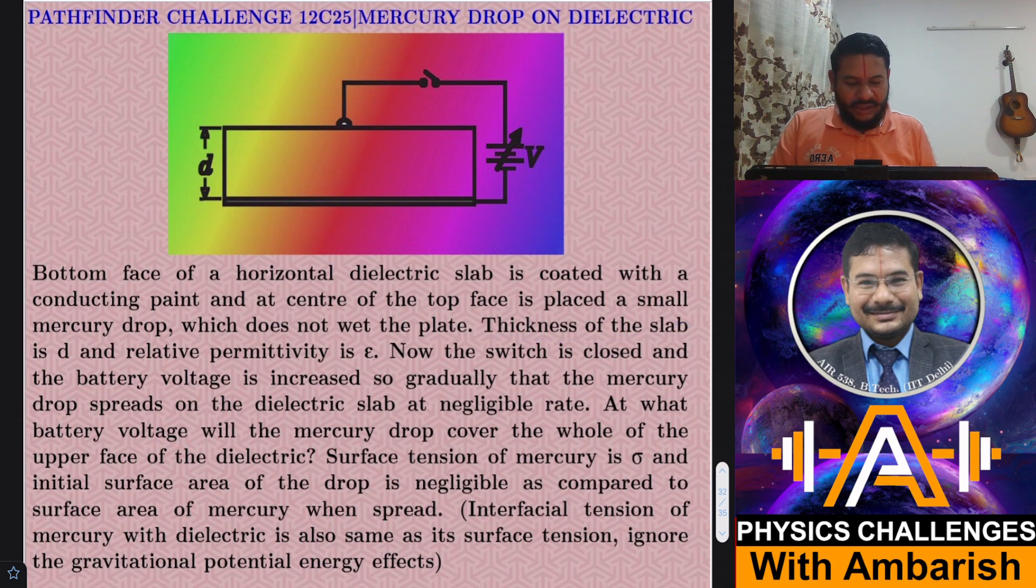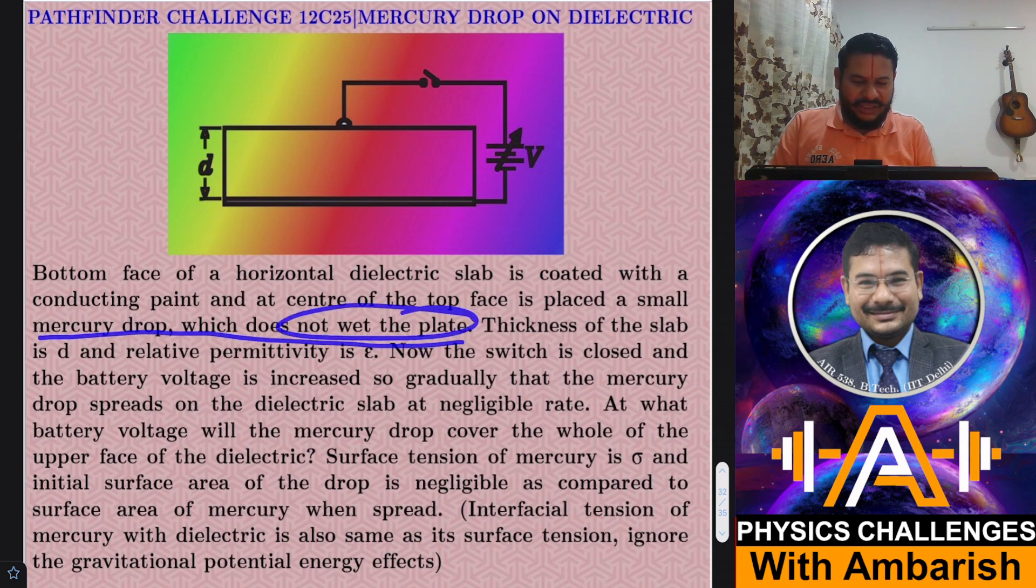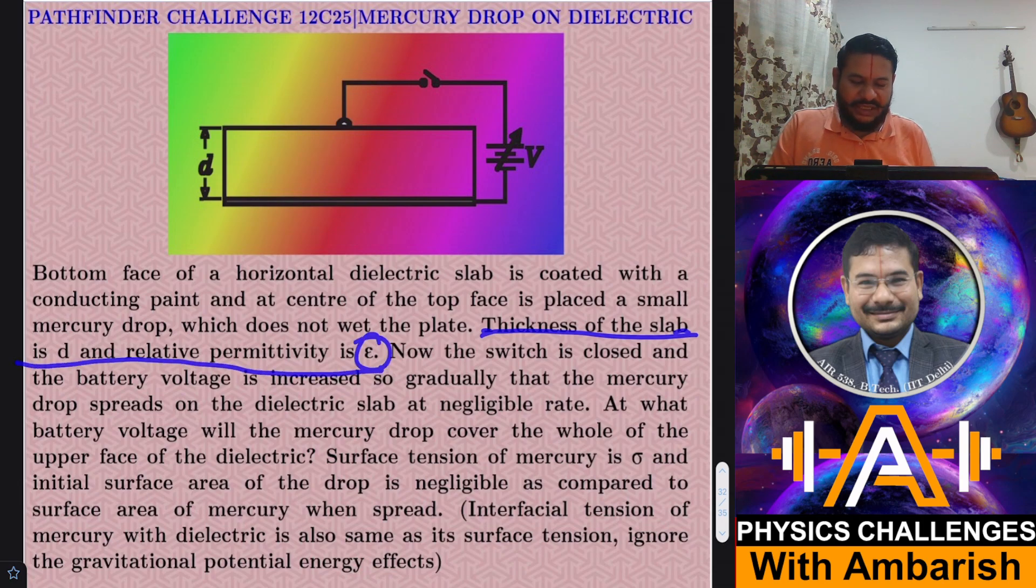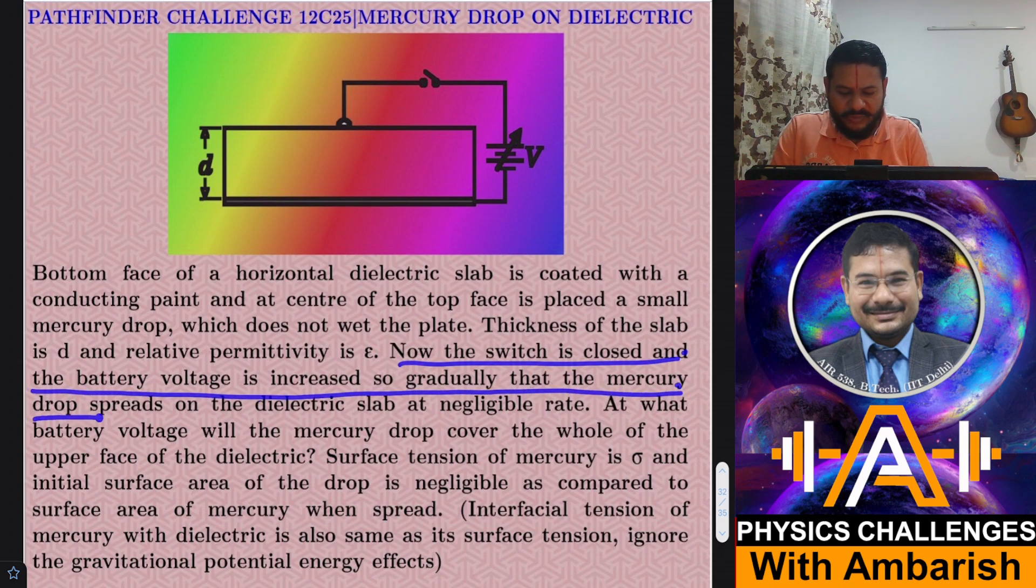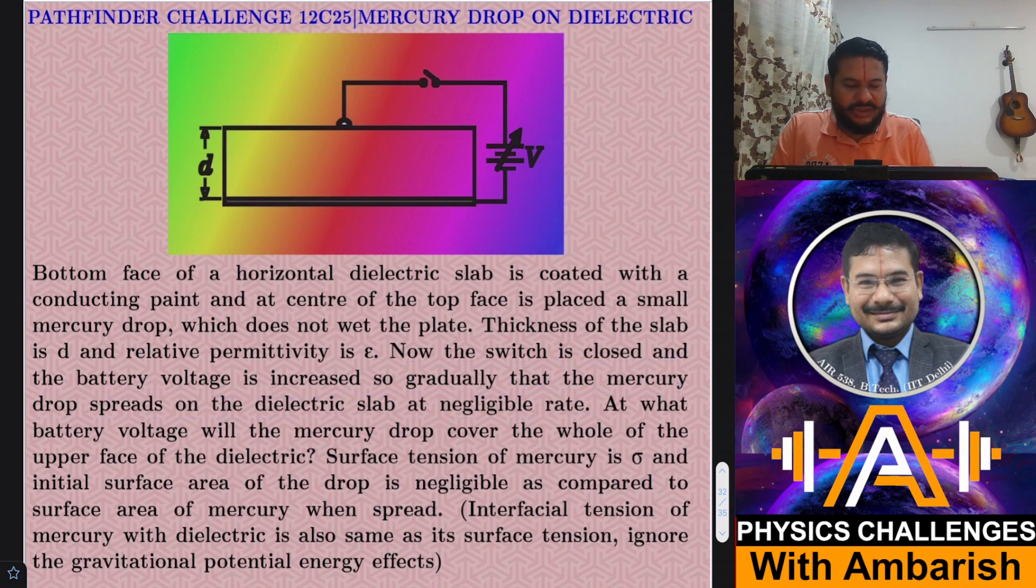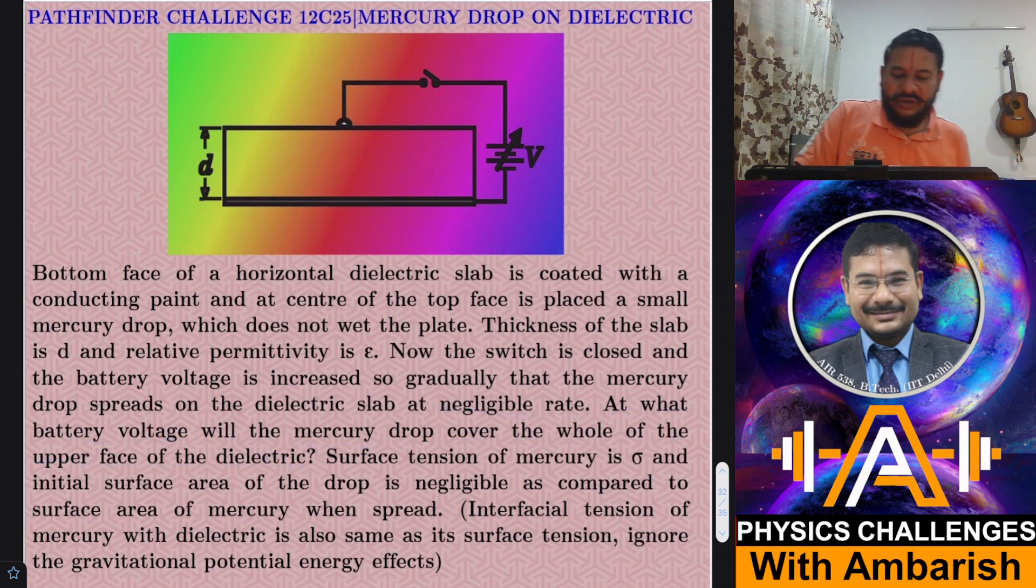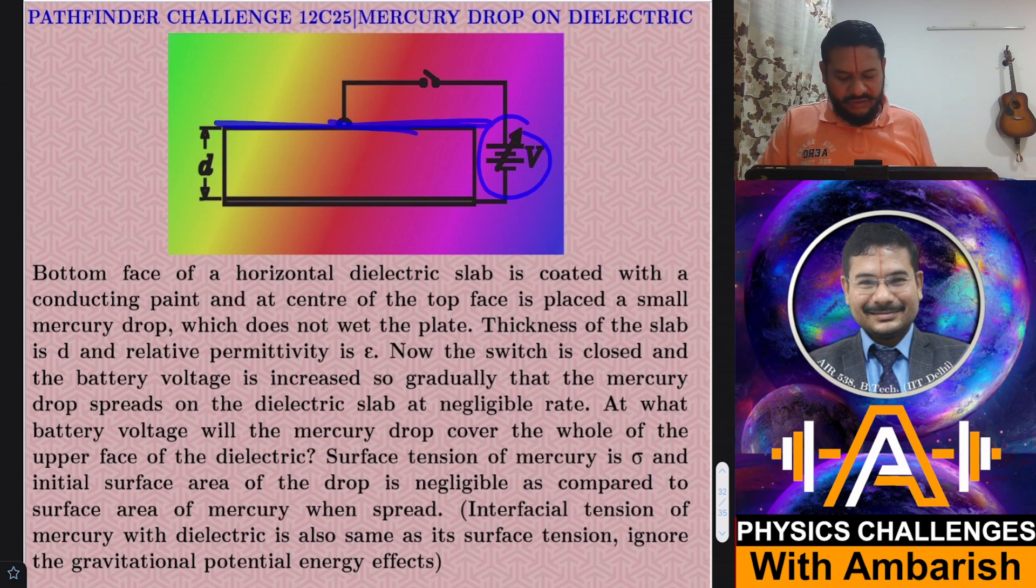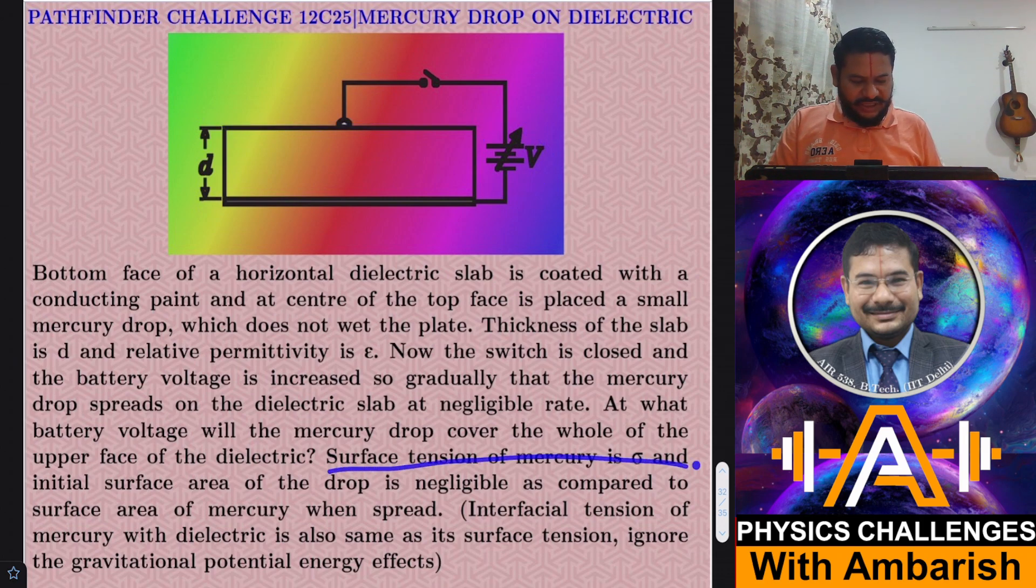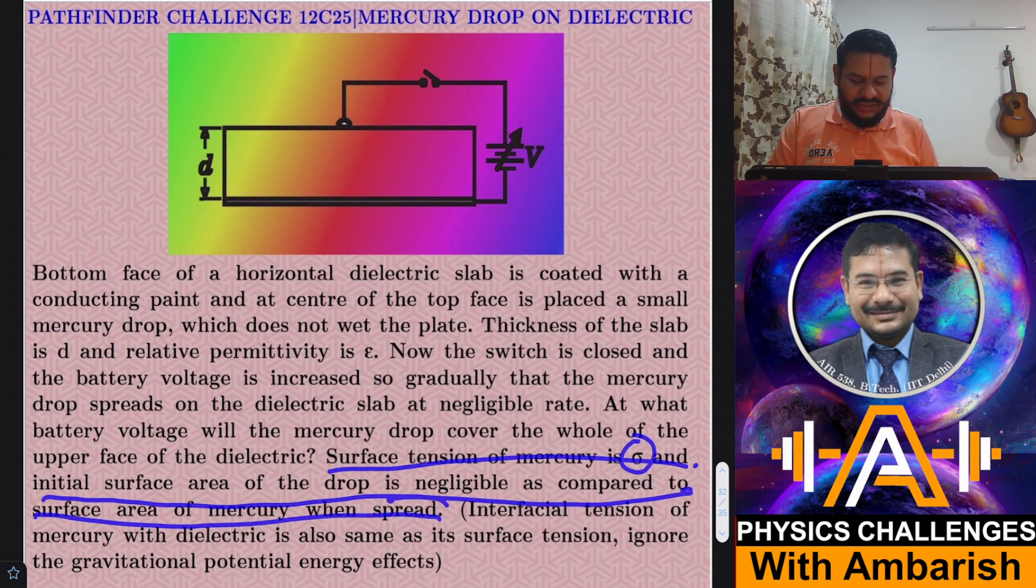Thickness of the slab is D and relative permittivity is epsilon. Now the switch is closed and the battery voltage is increased gradually so that the mercury drop spreads on the dielectric slab at a negligible rate. At what battery voltage will the mercury drop cover the whole of the upper face of the dielectric? Surface tension of mercury drop is sigma and the initial surface area of the drop is negligible as compared to the surface area of the mercury when spread.